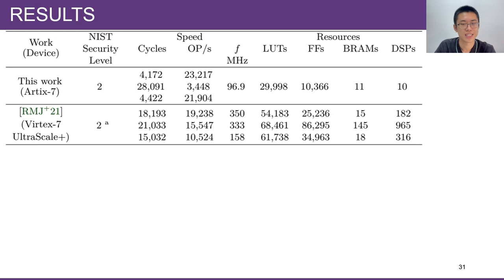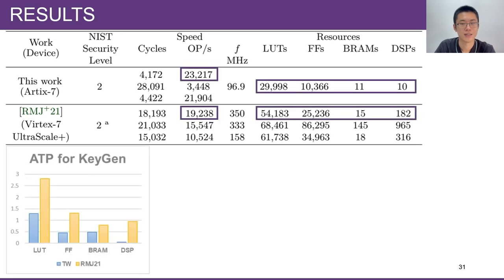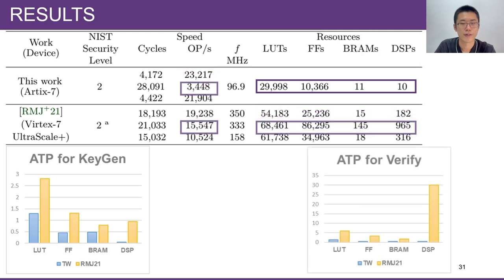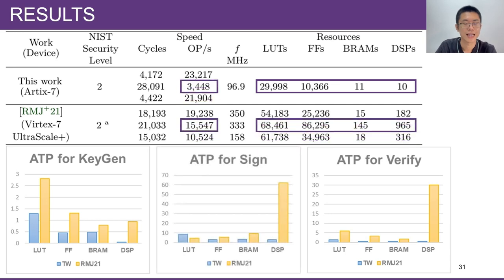For Sign, this work achieves a 1.6 to 22 times smaller ATP. For Verify, our ATP is 3.9 to 6.9 times smaller. For Sign, our ATP measured by lookup table is two times larger because they use 900 DSPs to implement many functions instead of lookup tables, which causes their ATP measured by DSPs to be 21 times larger.